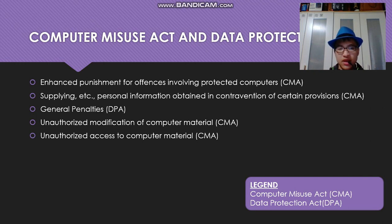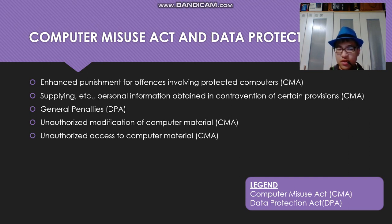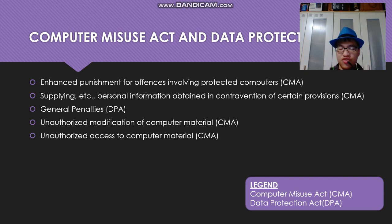The next point is supplying personal information obtained in contravention of certain provisions — basically, obtaining personal information you're not supposed to get from protected computers. We enhance punishment on people who do this. And we have the Data Protection Act on general penalties — any act involving protected computers results in general penalties, such as small fines of $1,000 per offense.